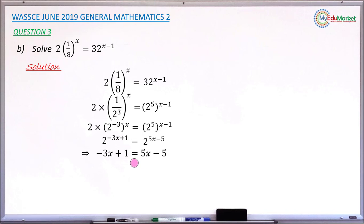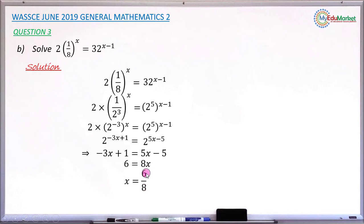Collecting like terms: the minus 5 shifts to the left becoming plus 5, so 1 plus 5 gives 6. The minus 3x shifts to the right becoming plus 3x, so 5x plus 3x gives 8x. Dividing both sides by the coefficient of x, which is 8, gives x equals 6 over 8. Simplifying this fraction gives x equals 3 over 4, and that is the answer.